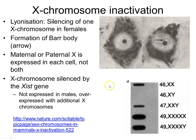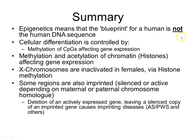H3K27 trimethylation is responsible for X chromosome inactivation in females. In any cell with two X chromosomes, one is always randomly silenced early in embryogenesis, so only one X chromosome is expressed in females. This silencing occurs via histone H3 lysine 27 trimethylation, which condenses that entire X chromosome.